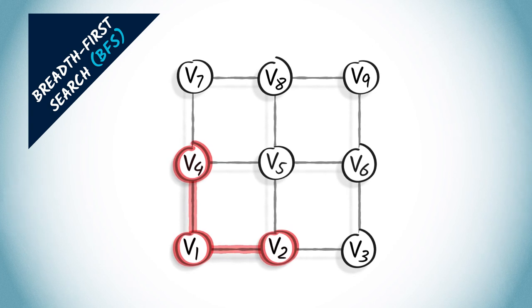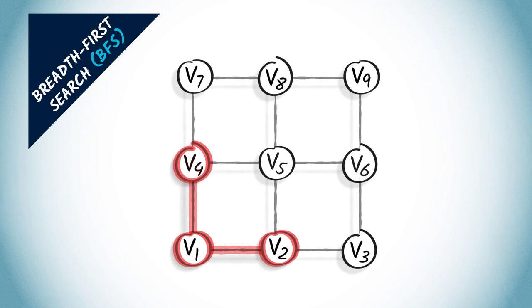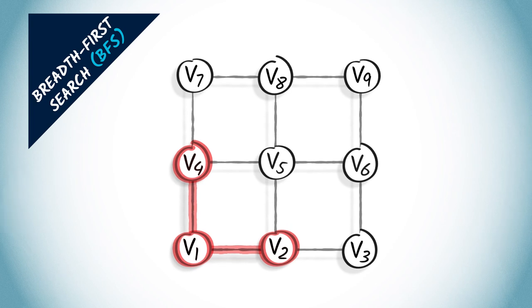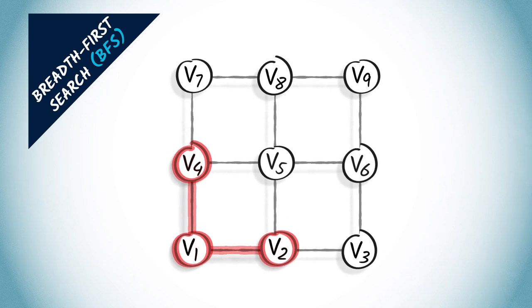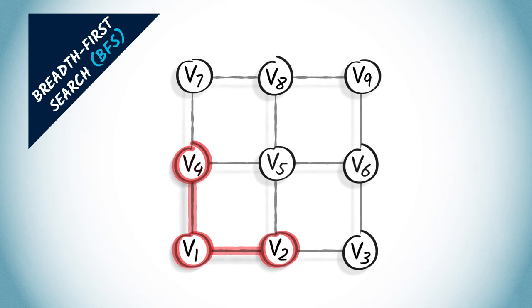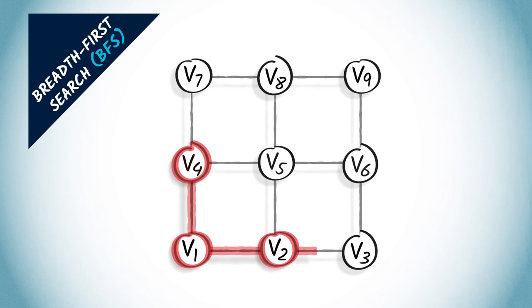Then, we explore all vertices two hops away from V1. A vertex two hops away from V1 is one hop away from a vertex that's one hop away from V1. So, we look at the neighbors of V2 and V4, and connect them to V2 or V4.